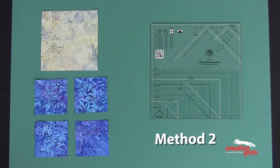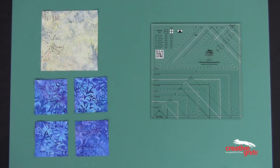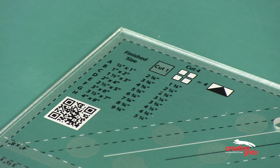Now let's look at the second method for making four at a time fast-flying geese. Select the appropriate size flying geese unit and follow the cutting chart printed on the ruler.